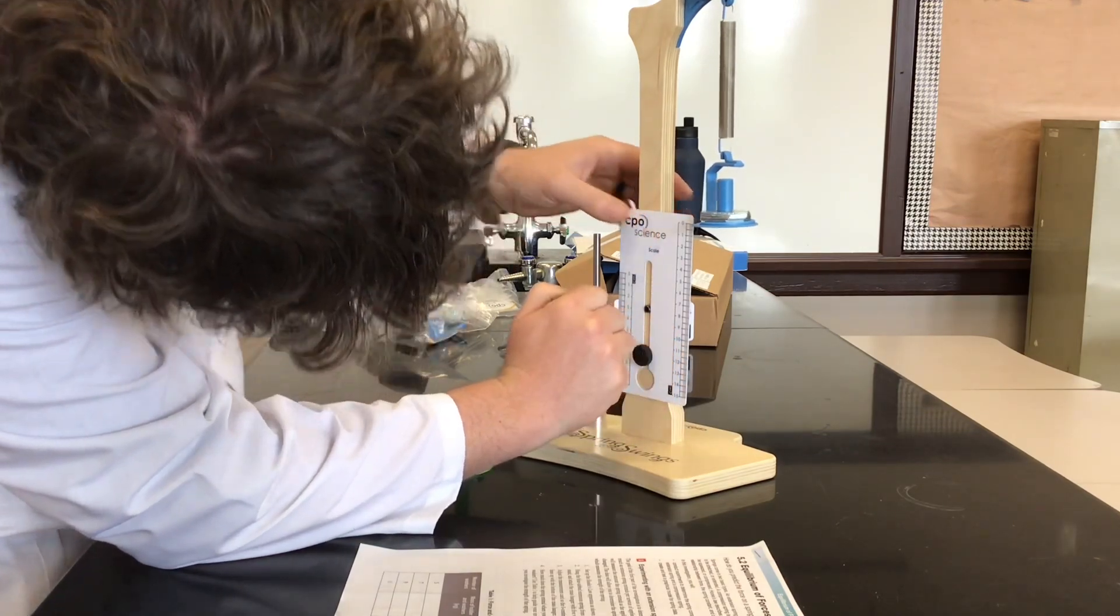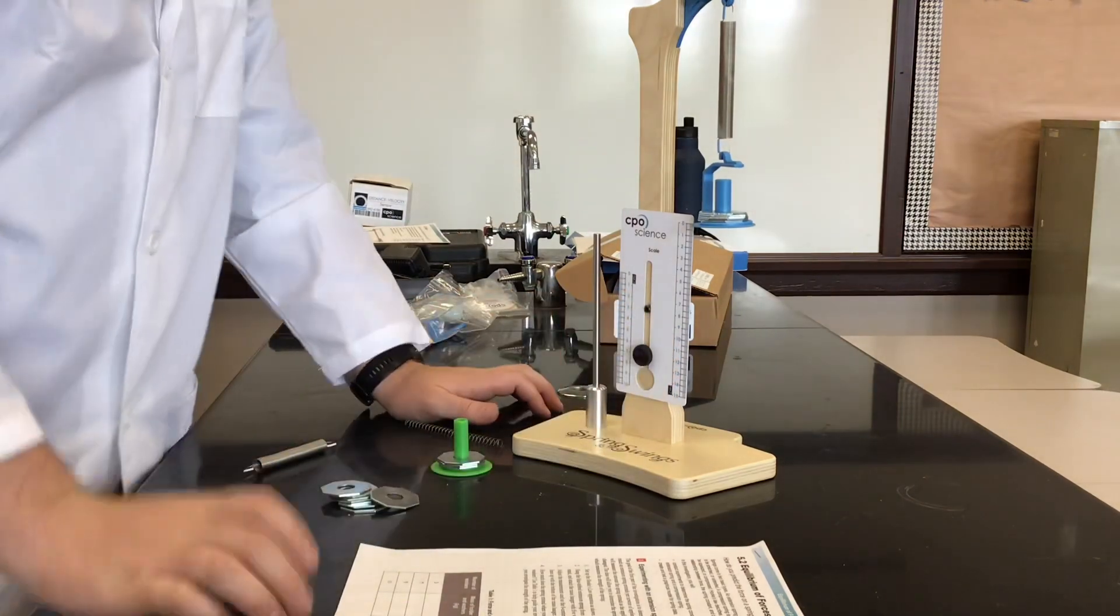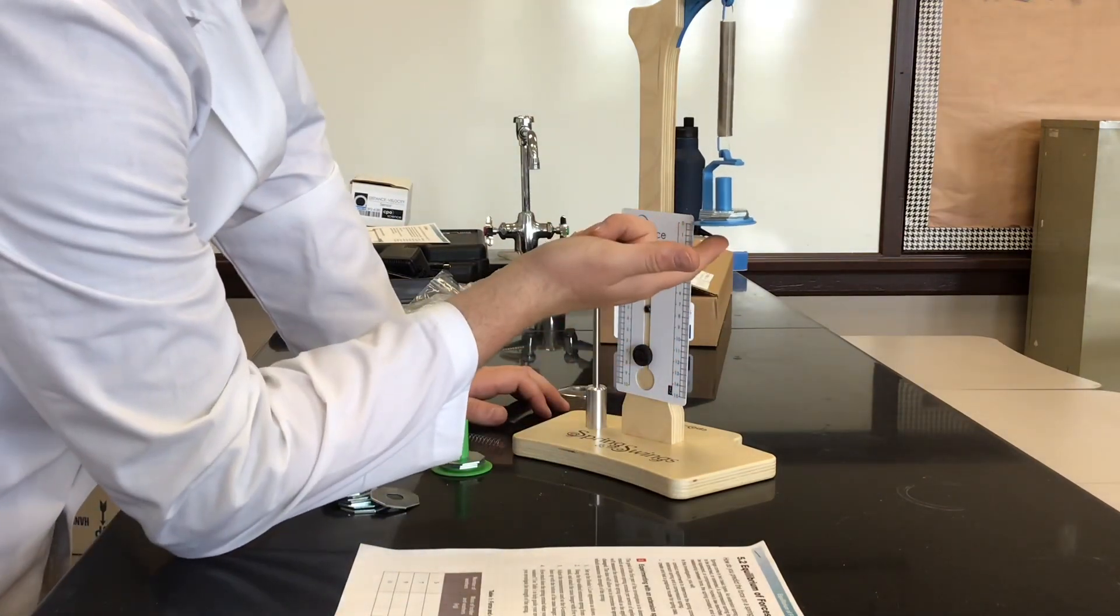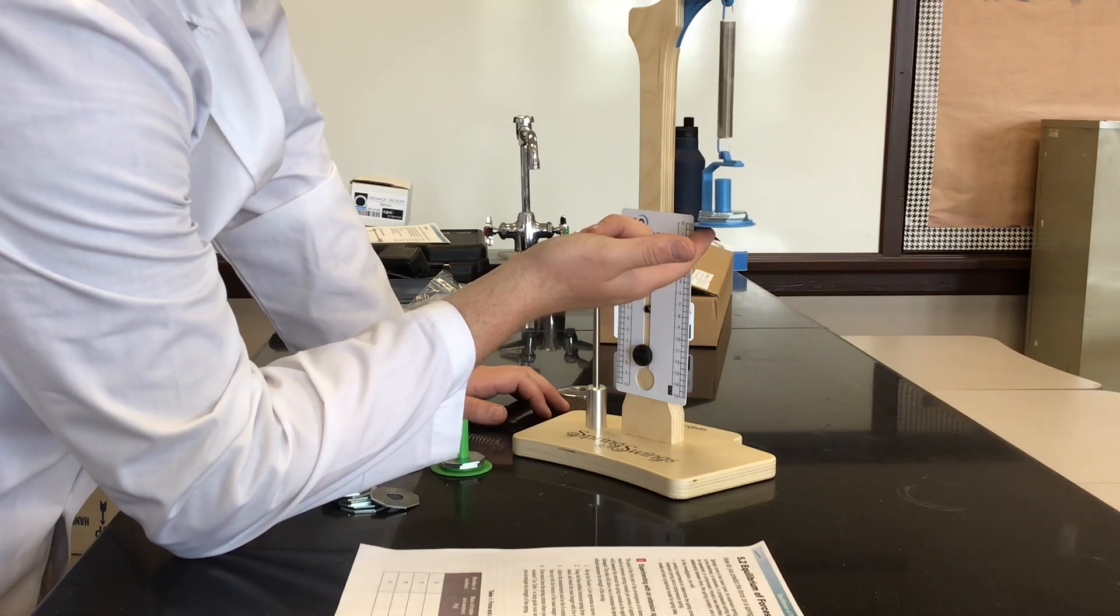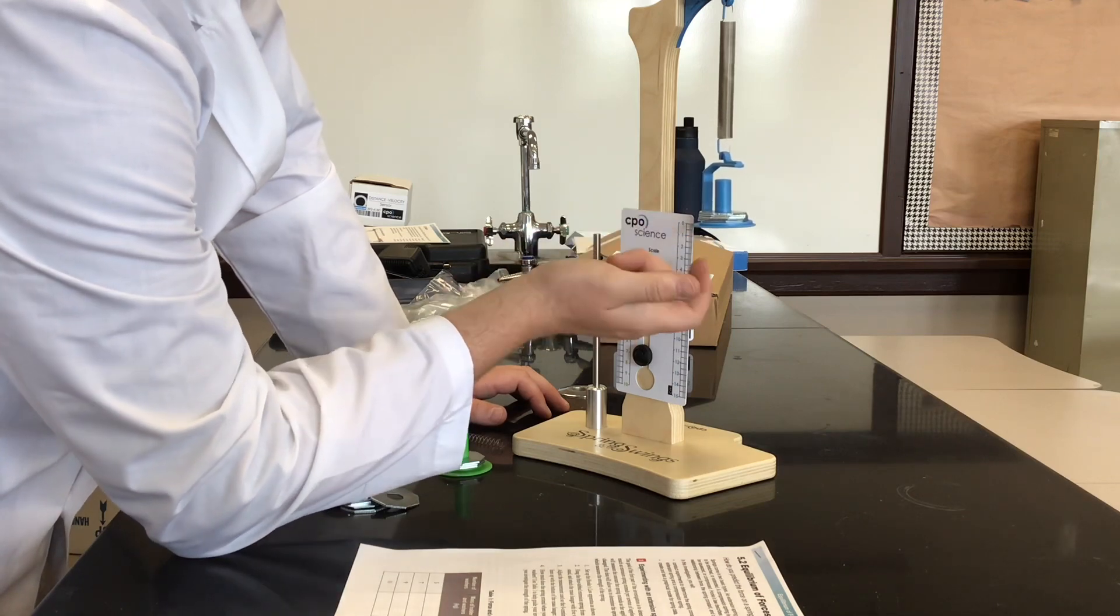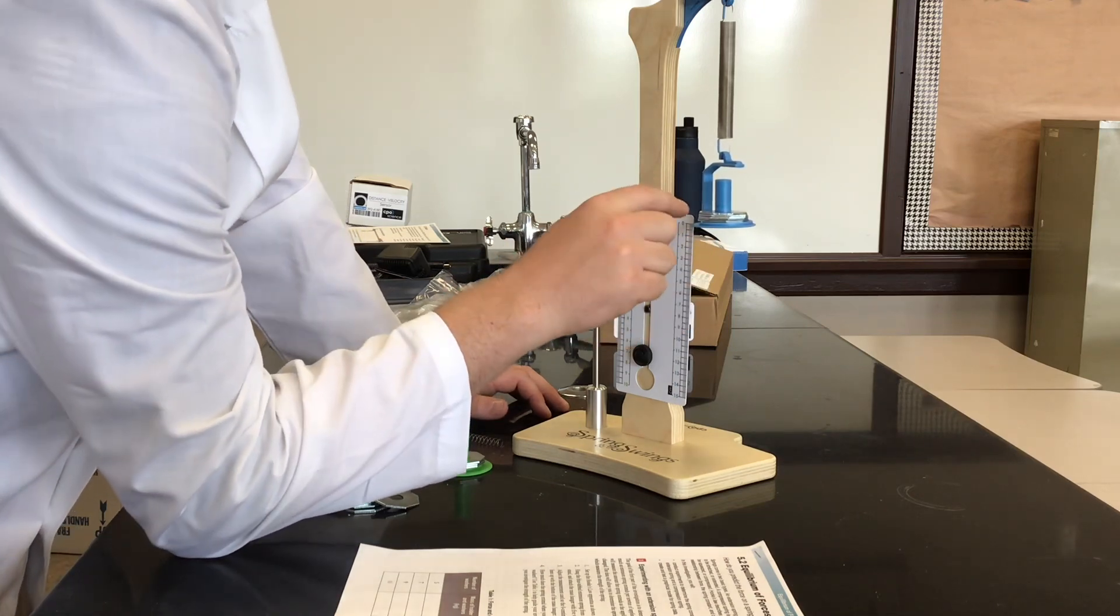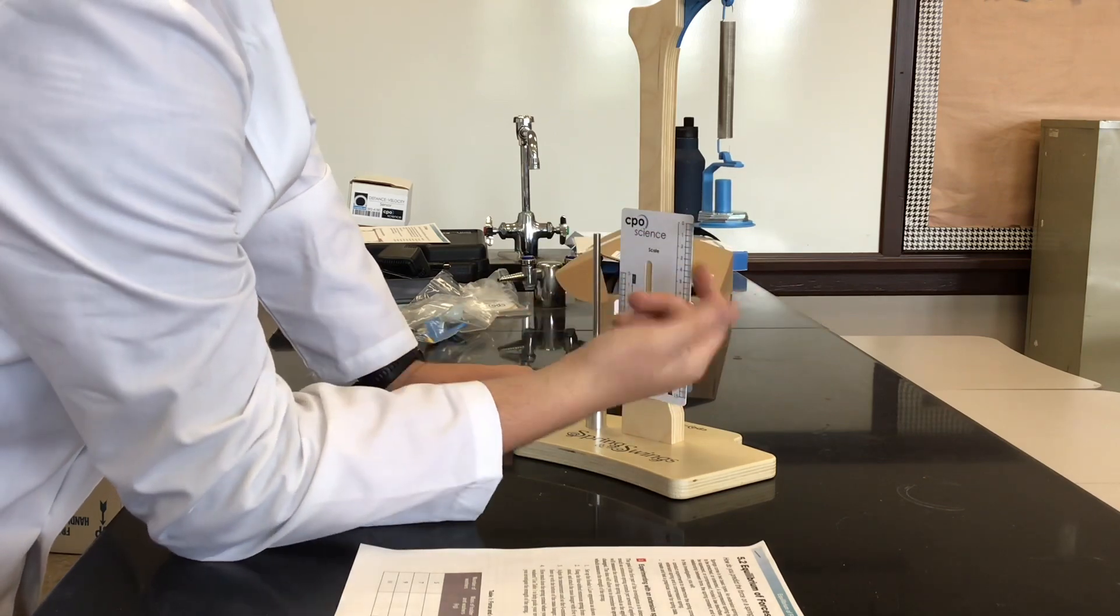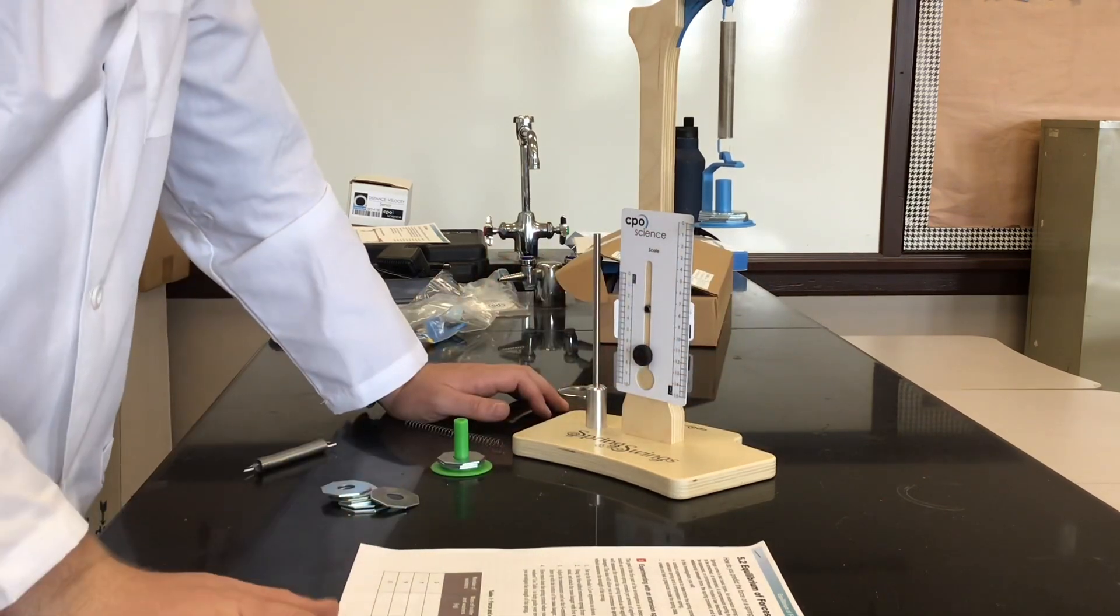I would try to tell your students to be very consistent with where they're measuring from. So I'm measuring where it's at on the exact bottom of this, but if they're measuring it from the bottom and then sometimes on the top and they're not being consistent, they're going to get the wrong values.